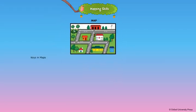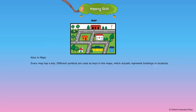Keys in maps. Every map has a key. Different symbols are used as keys in the maps, which actually represent buildings or locations.